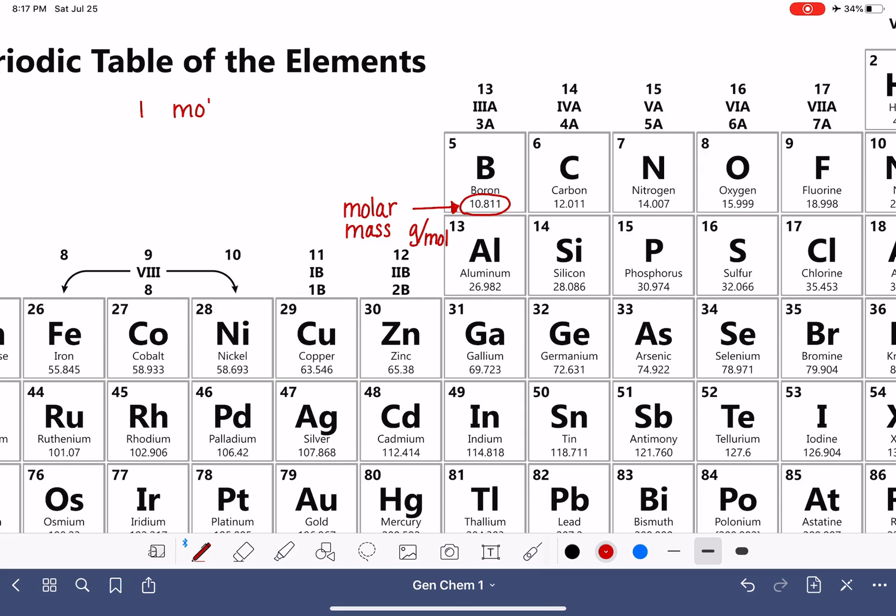One mole of boron is 10.811 grams. And likewise, one mole of zinc is 65.38 grams. And for germanium, one mole is 72.631 grams. And you get the idea.